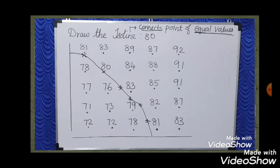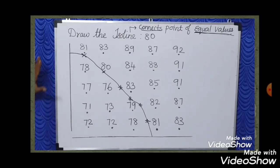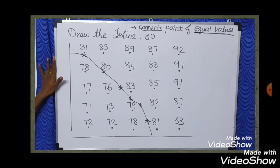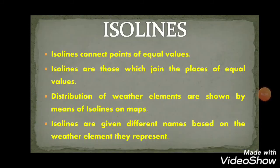There are many types of isolines. Isotherm represents temperature. Isohyet represents rainfall. You can connect equal values using these lines. Now we have a clear idea about isolines — they connect points of equal values.